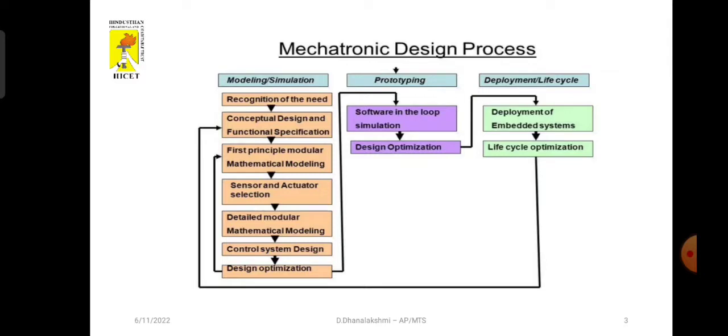Next one is prototyping. Prototyping includes software-in-the-loop simulation, hardware-in-the-loop simulation and design optimization. What is meant by hardware-in-the-loop simulation? In automation purpose, we use controller and the program is embedded in the computer. Hardware-in-the-loop simulation includes only input and output devices, that is sensors and activators connected to the computer through communication cables. These also use optimization techniques to increase efficiency.